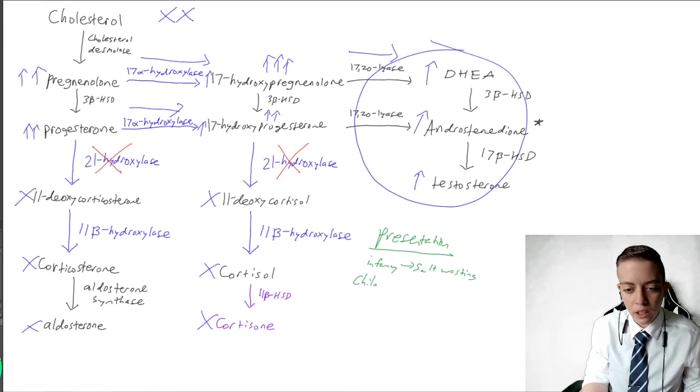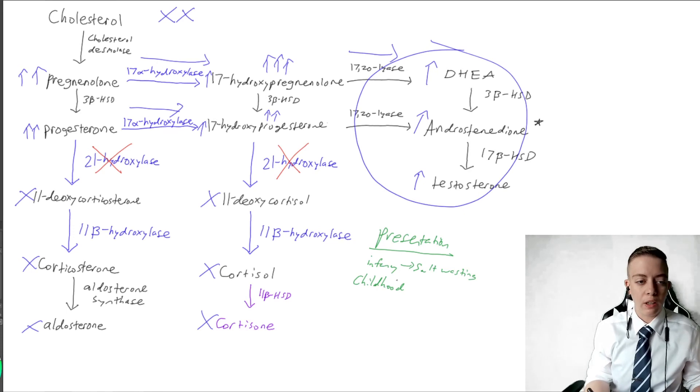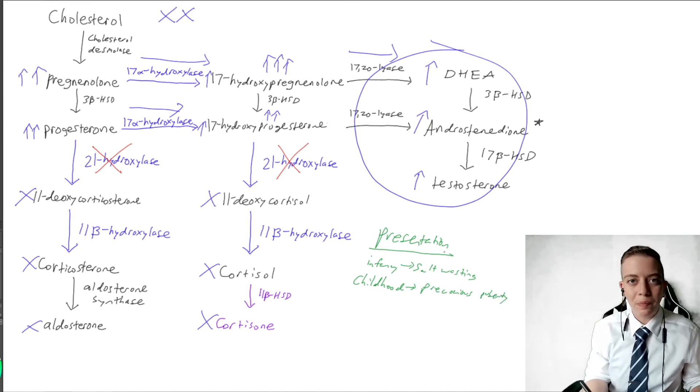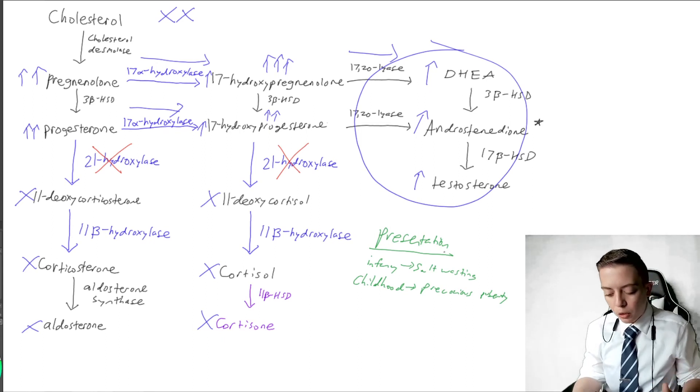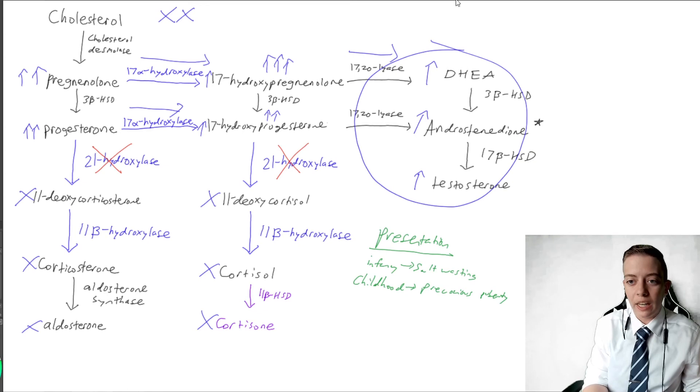But then if this presents later on in life, let's say this happens in childhood, where maybe they had functioned for a little bit, but then eventually they are no longer producing a functional 21-hydroxylase, then we might see precocious puberty. And if you also remember from my puberty blocker videos, precocious puberty is a reason to prescribe luprolide. This is one potential cause of precocious puberty because you're getting this increase in androgens at such a young age.